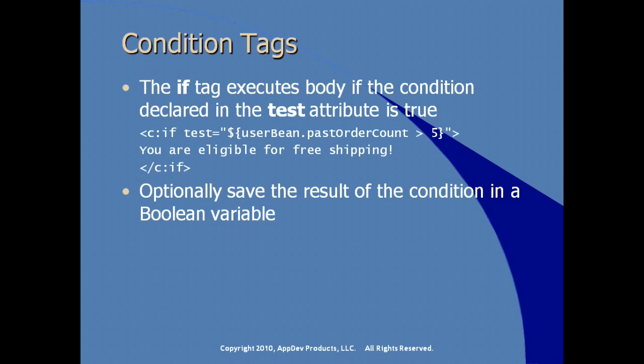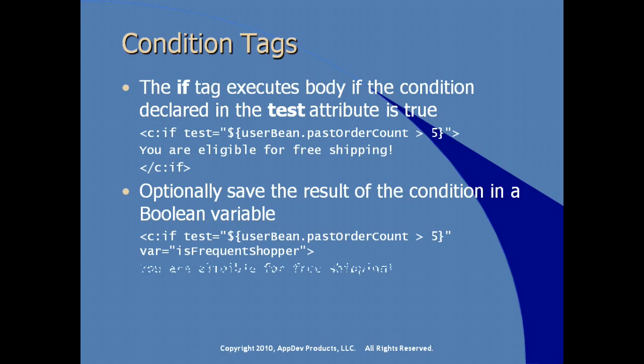Optionally, you can save the result of the condition in a boolean value. If the test is true, we create a local variable called isFrequentShopper and store it within our code. We print out 'you are eligible for free shipping' after the close tag for our if. We can then create another test to check if the variable isFrequentShopper exists.